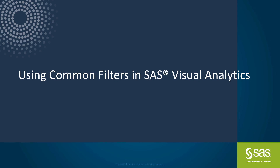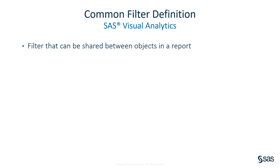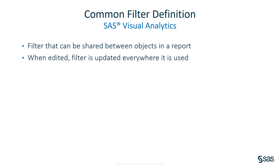In this video, I will demonstrate how to create and apply common filters in SAS Visual Analytics. Let's take a look at the SAS documentation definition of a common filter. It is a filter that can be shared between objects in a report. When the common filter is edited, the filter is updated everywhere it is used. The common filter cannot be shared between reports.